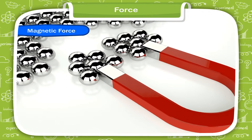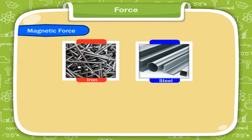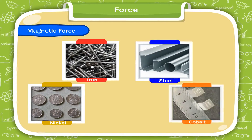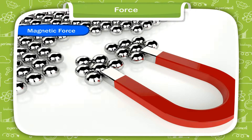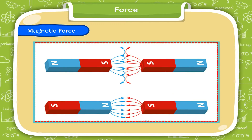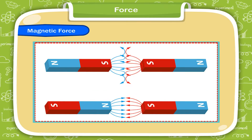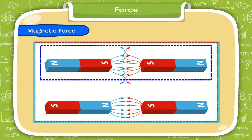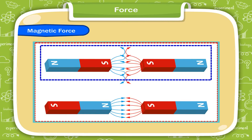Magnetic Force: The force by which a magnet attracts or repels objects like iron, steel, nickel, and cobalt is called magnetic force. A magnet attracts another magnet when unlike (different) poles of different magnets are brought near each other. A magnet repels another magnet when like (same) poles of different magnets are brought near each other.